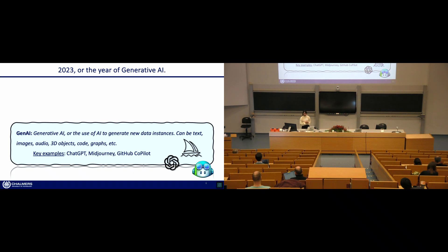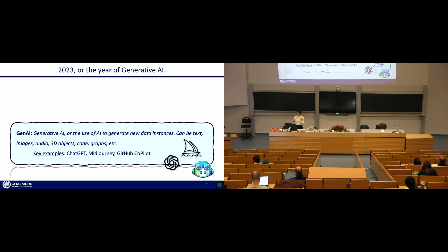Now we can get started talking about generative AI. Most of you are likely familiar with it, but just to get everyone on the same page: Gen AI stands for generative AI, and that's the use of AI to generate new data instances. This can be text, images, audio, 3D objects, code, graphs, and so on. Key examples include models like ChatGPT for generating dialogue, Midjourney, GitHub Copilot, and so on. I titled this slide 'the year of generative AI, 2023,' because this is the year it finally entered the mainstream.